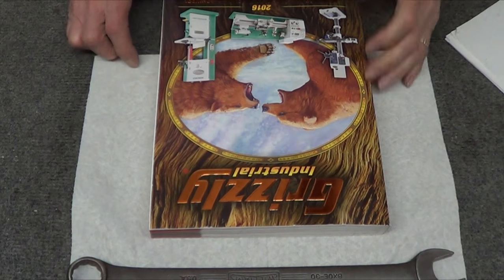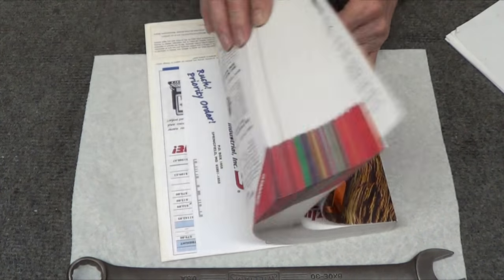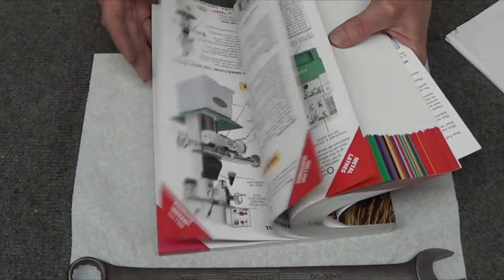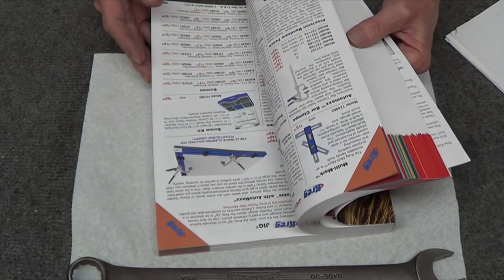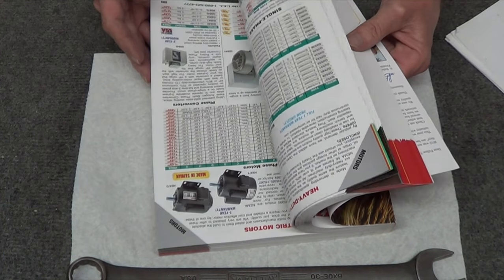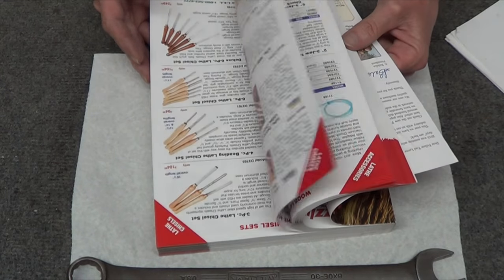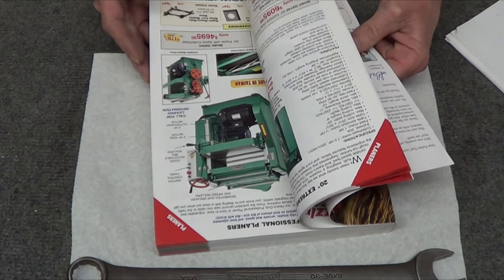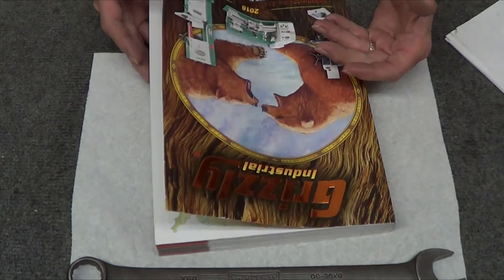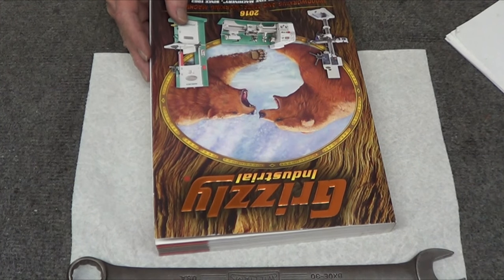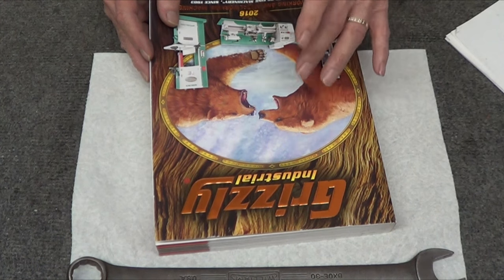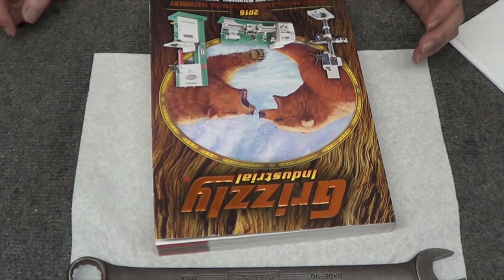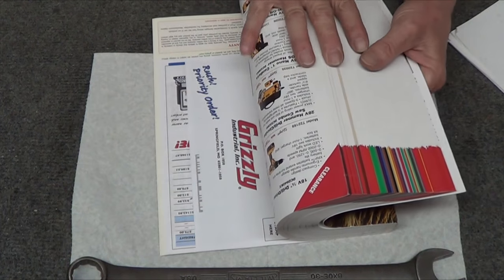There's some other people thinking about Grizzly products. Here's their catalog. This is not a small company by any means. They have a lot of stuff that they offer - lathes, mills, tools, motors. It's like a Granger.